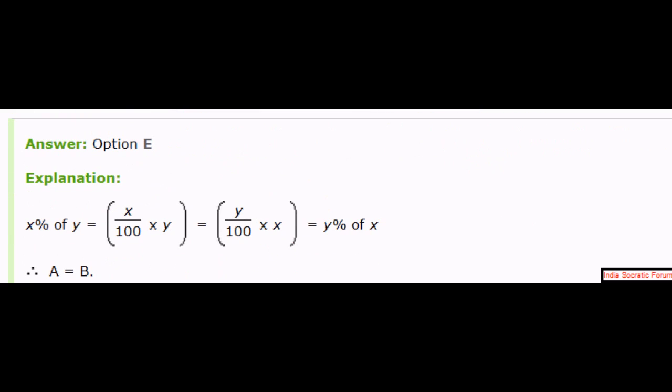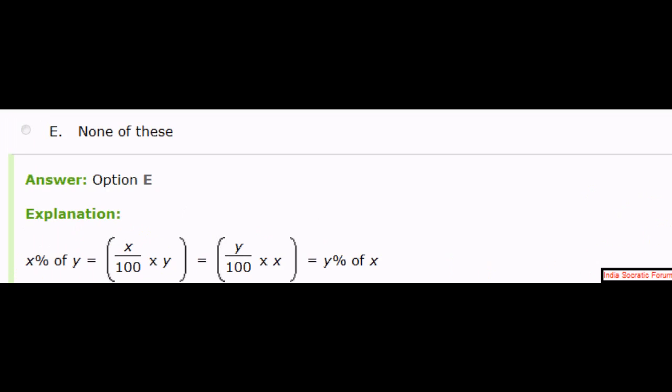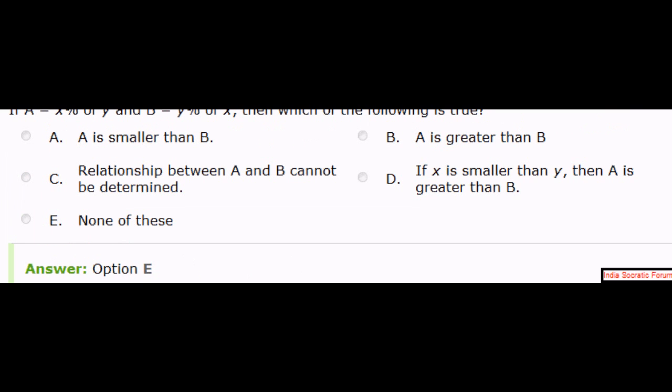Let's see the explanation. x percentage of y is x by 100 into y. That is equal to y percentage of x. You can change x and y to have y by 100. That is equal to y percentage of x. Therefore, A equals B. So we don't have a choice like A and B are same. We only have A smaller, B smaller, etc. Not able. A and B are equal.